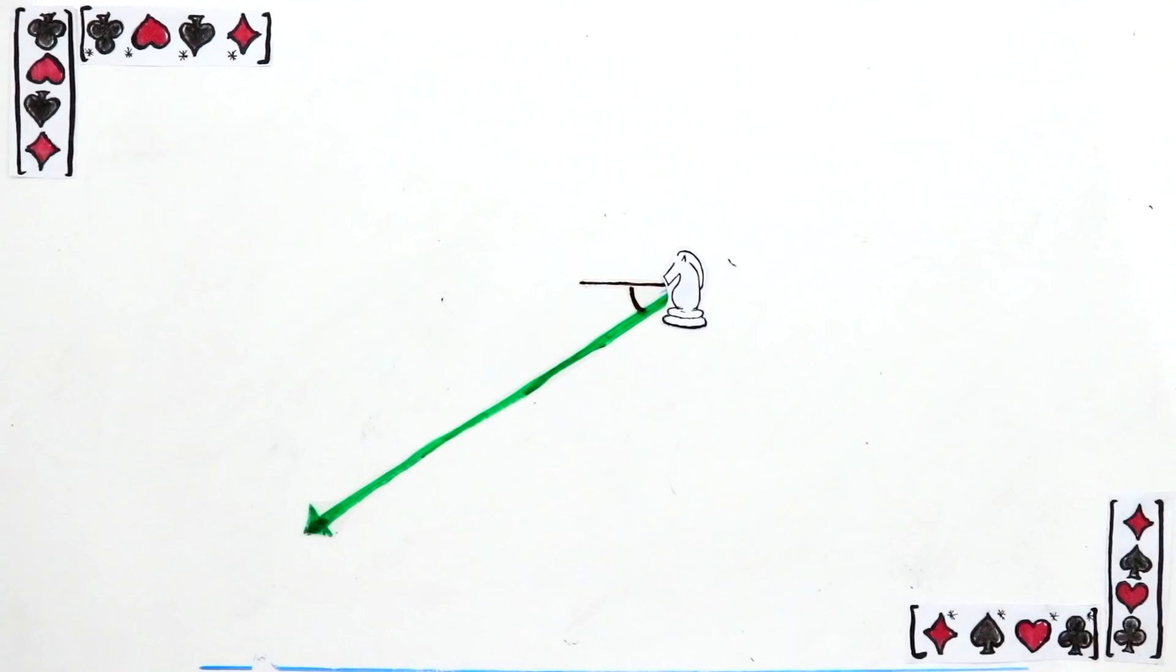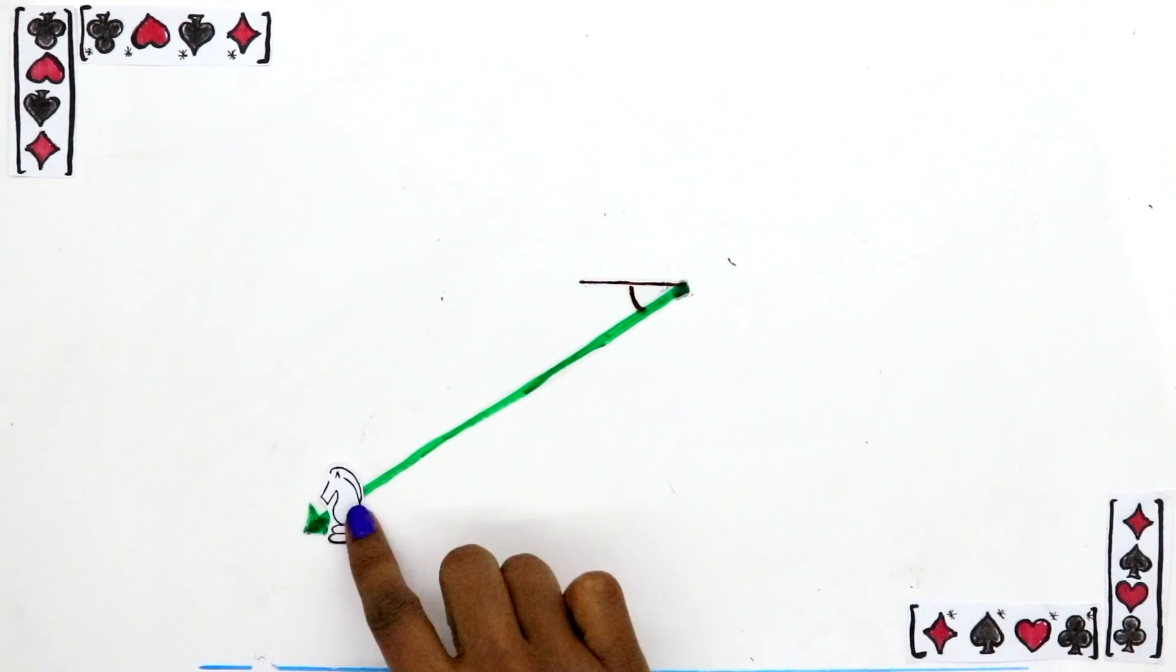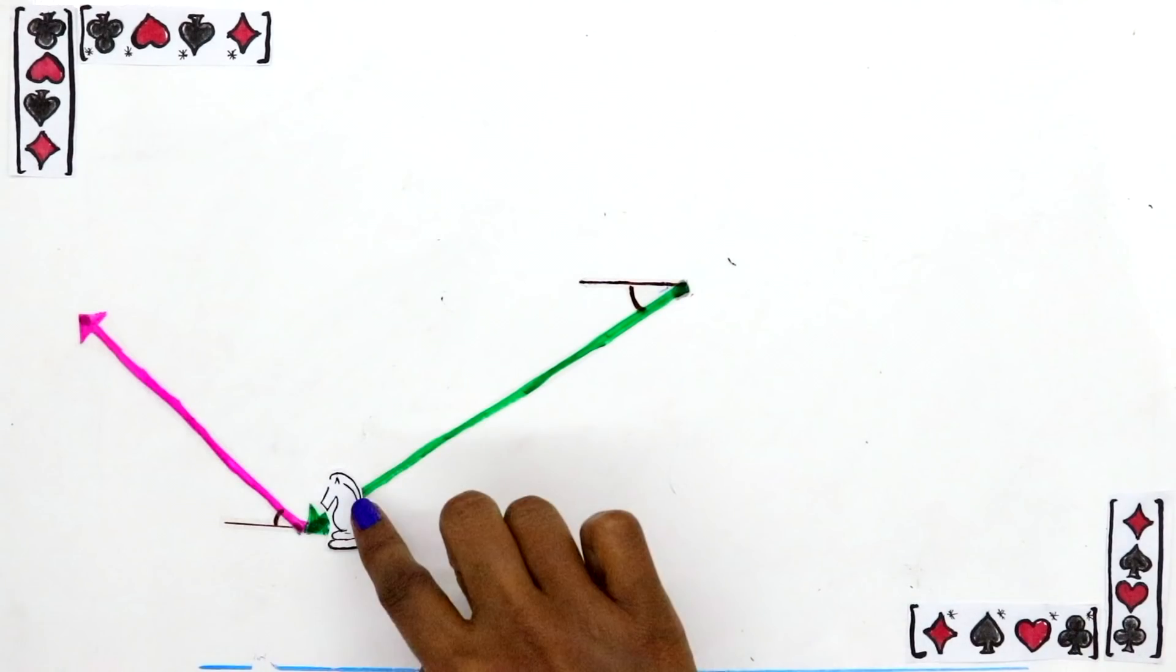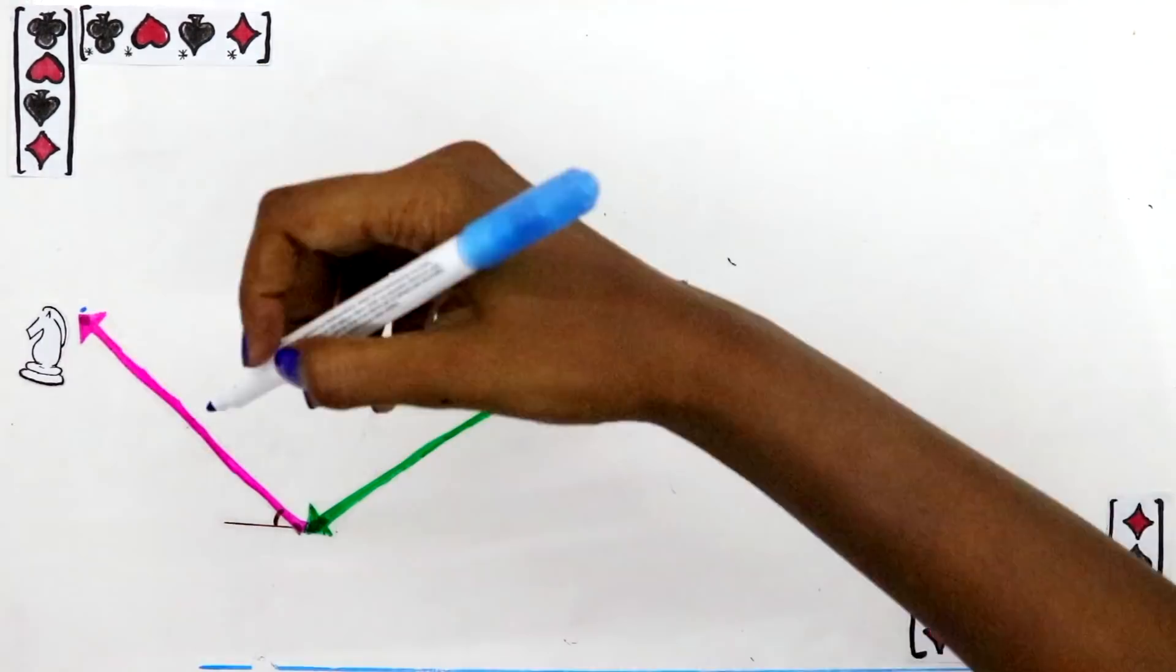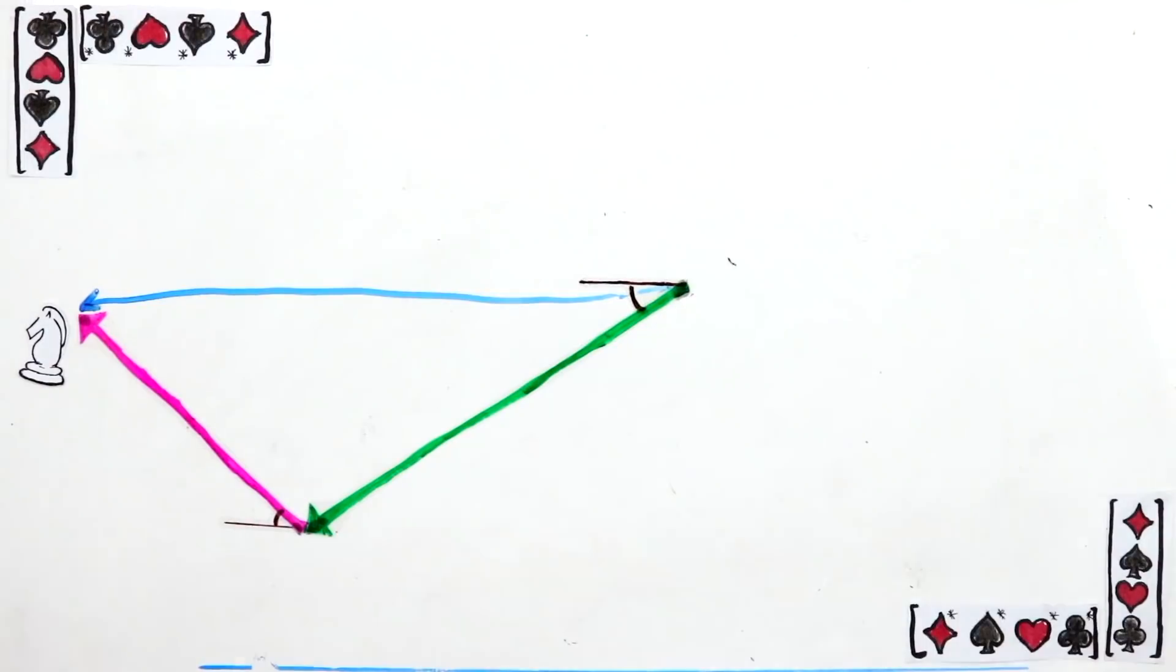When you add two vectors, what you're really saying is, if I go the direction the first vector told me to, and then from that end point, go the direction the second vector wanted me to go, in total, how far did I get from the start, and in what direction? So, in this example, the vector representing the overall path is this, and so this is the sum of these two vectors.